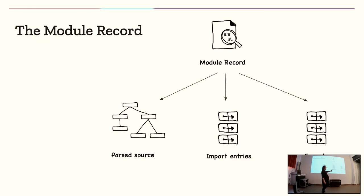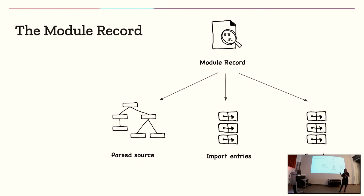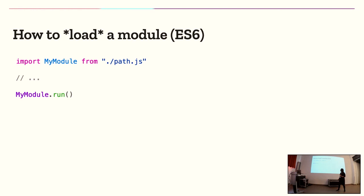The data structure I've described is called the module record. To simplify, we have three parts: the parsed source, the import entries which require the support of the host, and the exports.